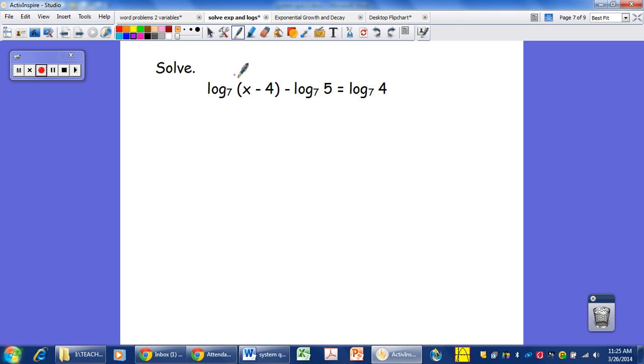So here we have log and log, two logs on one side and log. So we have to condense. We're going to have to condense these so that we have one log on both sides. So once again, we're going to use the property that subtraction of logs becomes division of their values. So log base 7 of x minus 4 divided by 5 equals log base 7 of 4.